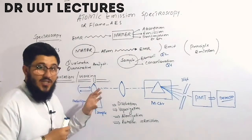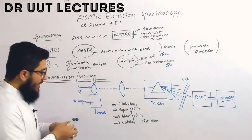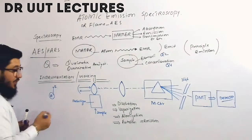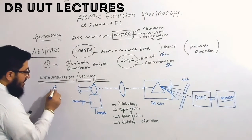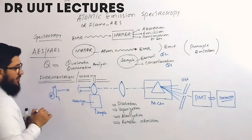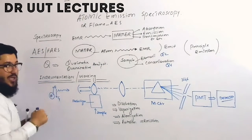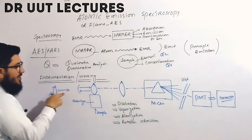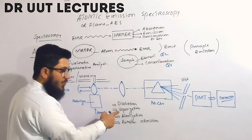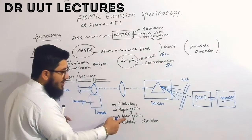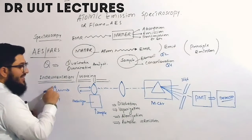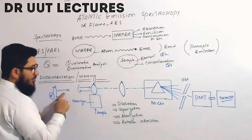The atoms of the sample gain heat energy from the flame. When atoms get this energy they become excited — they move from the ground state to the excited state. To become stabilized they must return to the ground state, and in doing so they emit electromagnetic radiation. So the steps are: dissolvation, vaporization, atomization (gaseous sample becomes atomic), and excitation followed by emission of radiation.